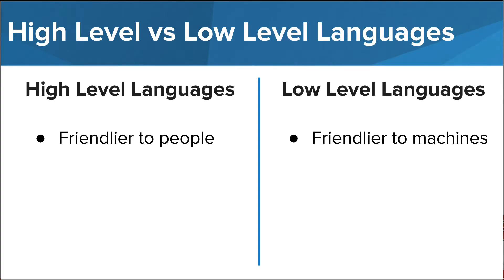This also makes them easier to debug, or find and fix errors in. On the other side, low-level languages are easier for machines or computers to understand. They use language that is closer to what the computer will understand and, in turn, don't take up as much memory or space.